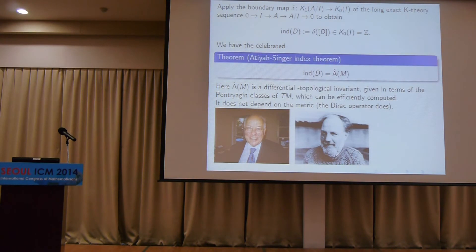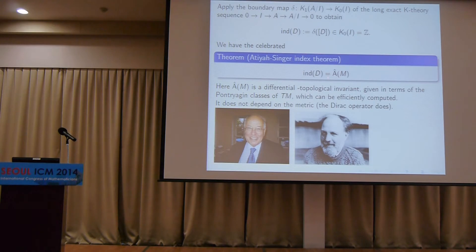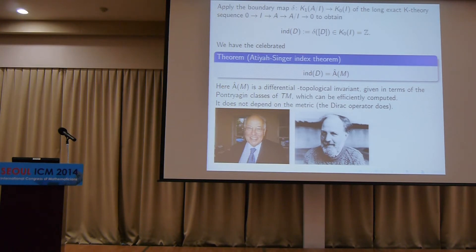The index depends on the operator, which depends on the metric — but there is a formula for it: the Atiyah-Singer index theorem. This lets us compute the index without solving the operator problem: you look at the tangent bundle of your manifold, compute a specific formula in terms of the Pontryagin classes, and this gives the Â-genus of the manifold. So on the one hand the index connects to the Dirac operator; on the other hand it's something purely topological — much like the Gauss-Bonnet theorem connecting the Euler characteristic to geometry.